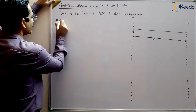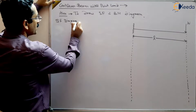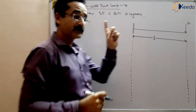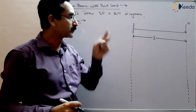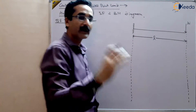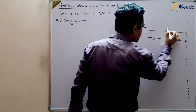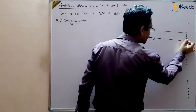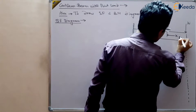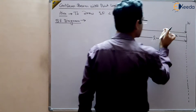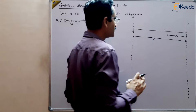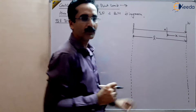Now, first we are talking about the shear force diagram. As we discussed previously, we will take a cross section X. It may be taken at the left or right of the section. We are taking a cross section X from this free end, at a distance X from that end, and we find out the shear force at this section X.